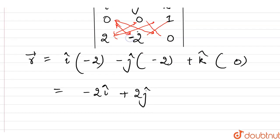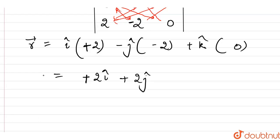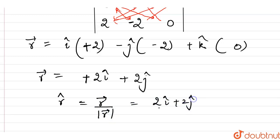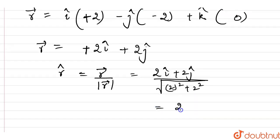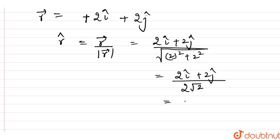Correcting the calculation: the j-cap term gives minus(−2), which is +2j-cap. So the resulting vector r is 2i-cap plus 2j-cap. Now we find the unit vector: r-cap equals r vector divided by its magnitude. The magnitude is the square root of 2² plus 2², which is the square root of 8, or 2√2. So the unit vector is (2i-cap plus 2j-cap) divided by 2√2, which simplifies to (i-cap plus j-cap) divided by √2.